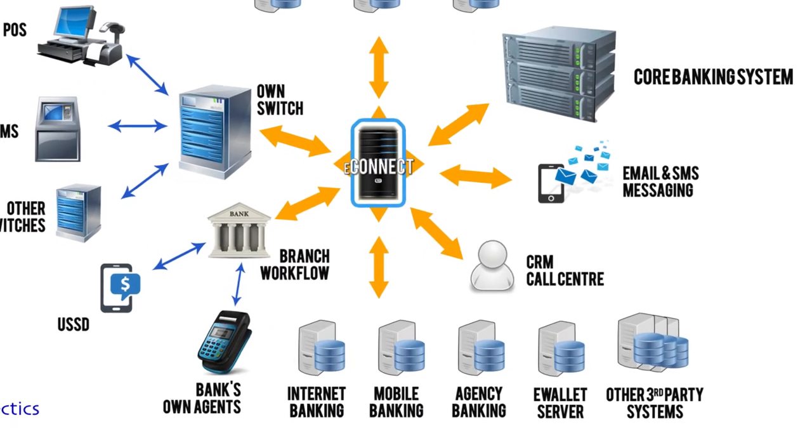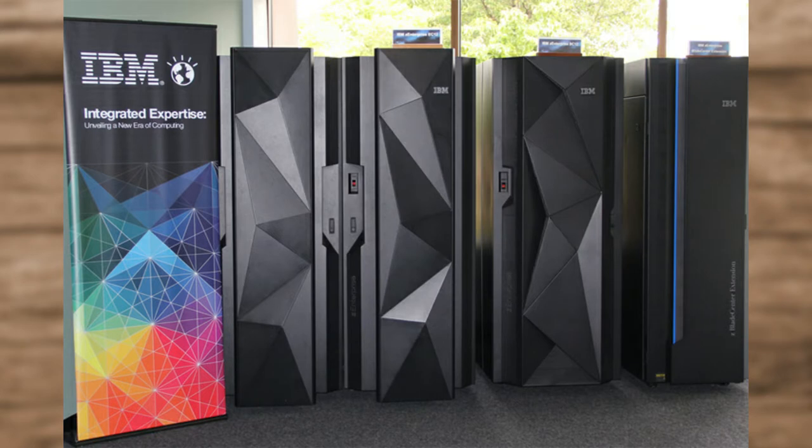The mainframe is connected to itself across branches and processes huge amounts of data. The mainframe computer is not the fastest, but it can handle multiple tasks and programs running simultaneously. The mainframe computer processes millions of instructions per second (MIPS). A well-known example is IBM System Z.